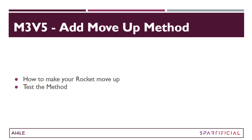Hey everyone, welcome to the fifth video of module 3 where we are going to add one behavior to this rocket with the help of a method through which it's going to start moving upwards. Let's see how exactly we can do this and then also test this method that we'll be creating. Let's get started.